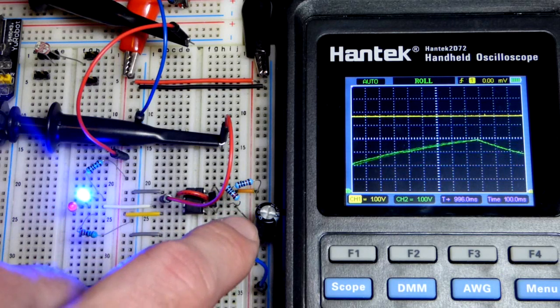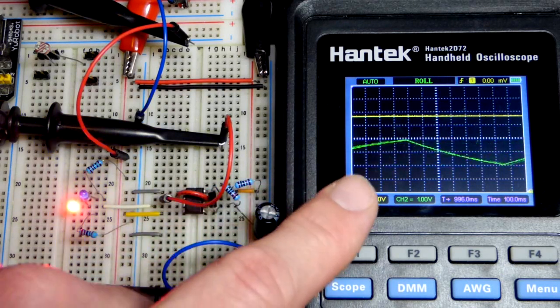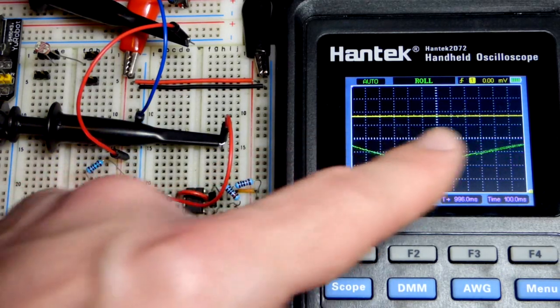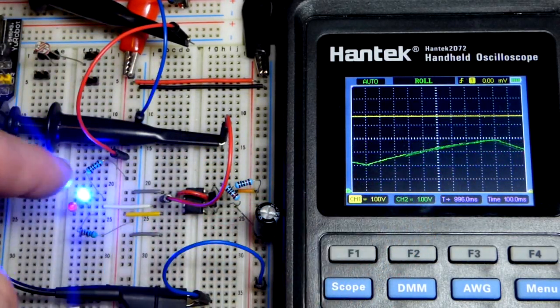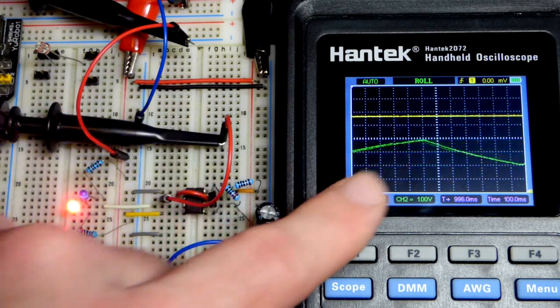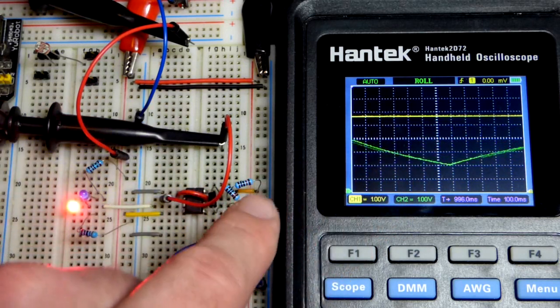That's because we have the capacitor wired up so that when it charges to two-thirds of the supply voltage, I put the supply voltage to six volts to make the math easy. So we charge up to four volts while the output is high, and then at that point, the output goes low.